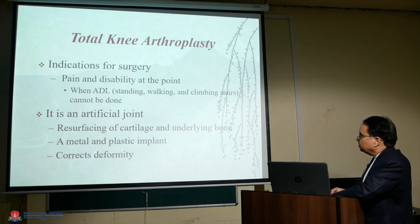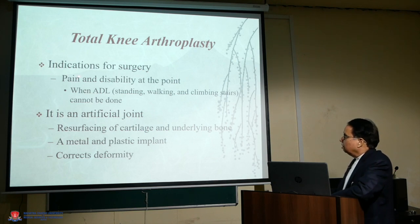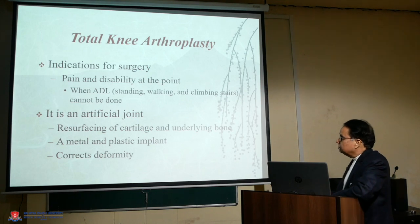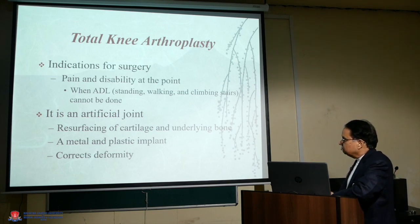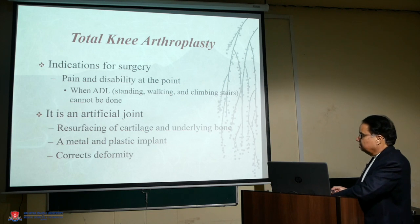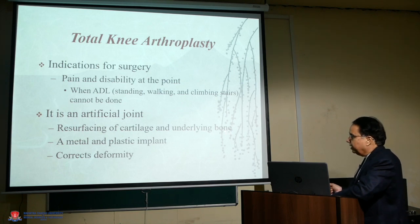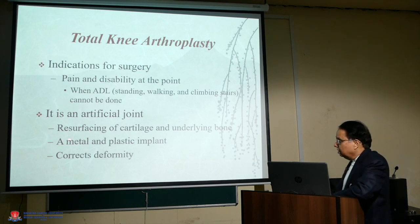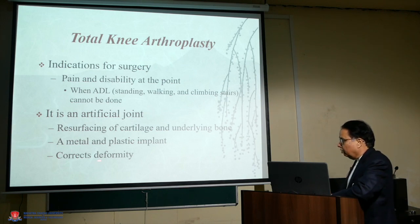The final treatment — the indication for surgery — is pain and disability. When daily living life becomes problematic, that is surely an indication. The answer is an artificial joint: resurfacing the cartilage and underlying bone. There are varieties including metal and plastic implants, and with that we also correct the deformity.